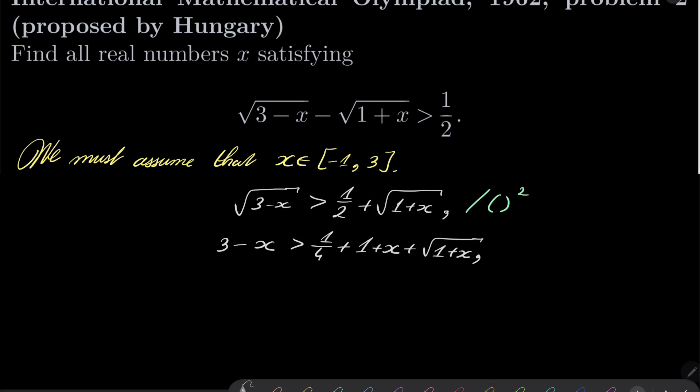We can multiply by 4, or we can first write 7 over 4 minus 2 times x greater than square root of 1 plus x, and now we can multiply by 4.